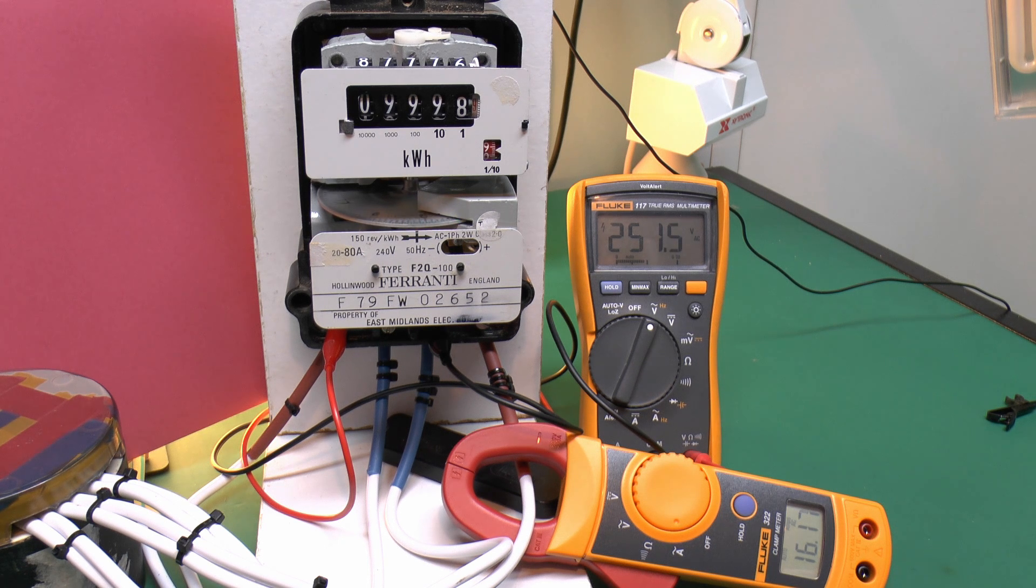Now the voltage and current do vary a bit over that minute. It actually starts at about 16.3 amps and ends at 16.12. That might be due to the wires and things heating up. And the voltage varies slightly as well. So if we take the average of the two, which is 16.21 amps and 251.4 volts, multiply those together we get 4.076.